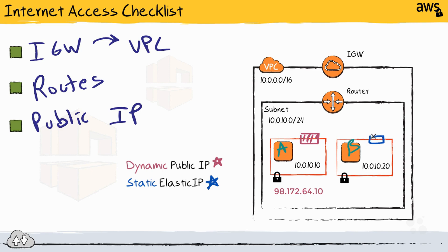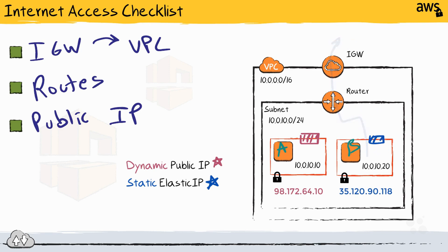The second option is using a static elastic IP address. Assigning that to instance B, it would similarly be able to make requests to internet resources and receive responses back. Both options work the same way from an internet access perspective. The difference is whether the IP addresses are persistent across reboots or restarts. Dynamic public IP addresses could potentially change across reboots or relaunches, whereas static elastic IP addresses are assigned to your AWS account and remain the same as long as you keep them available.